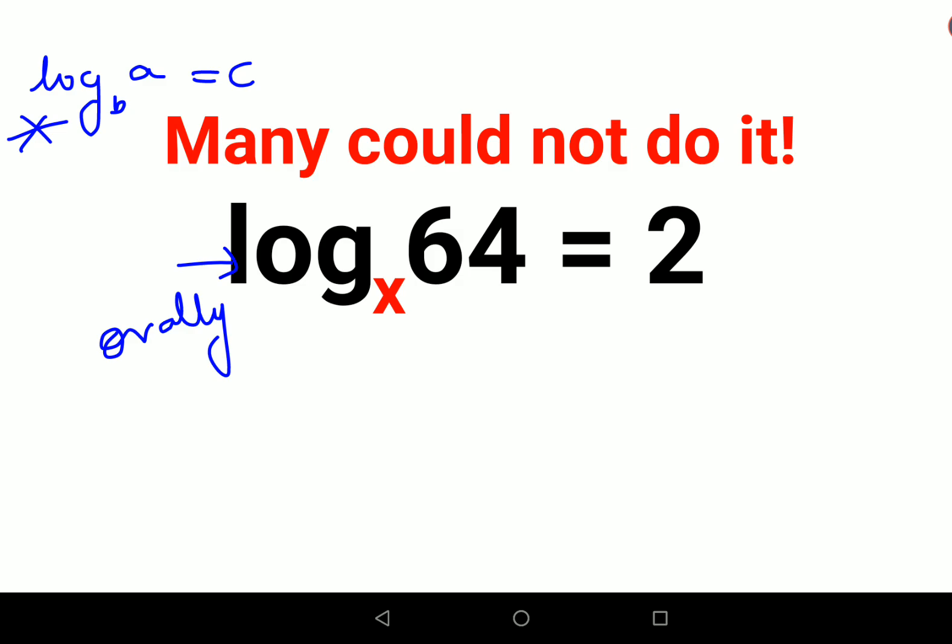Please understand when you have log of a to the base b equals to c, here you can get rid of the log by writing a equals to b raised to c. So similarly this becomes 64 equals to x raised to 2.